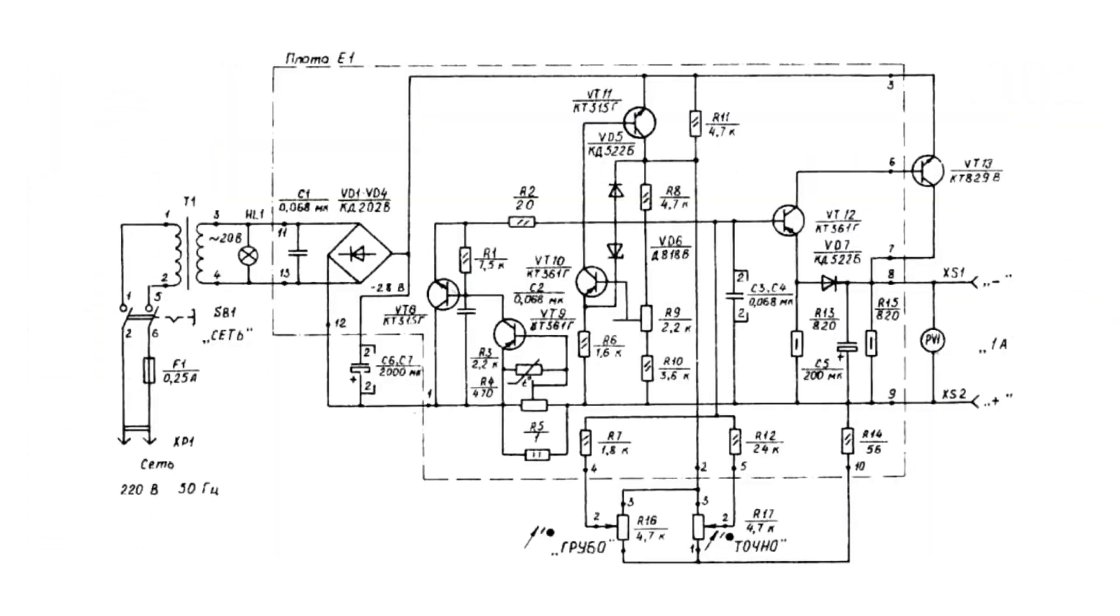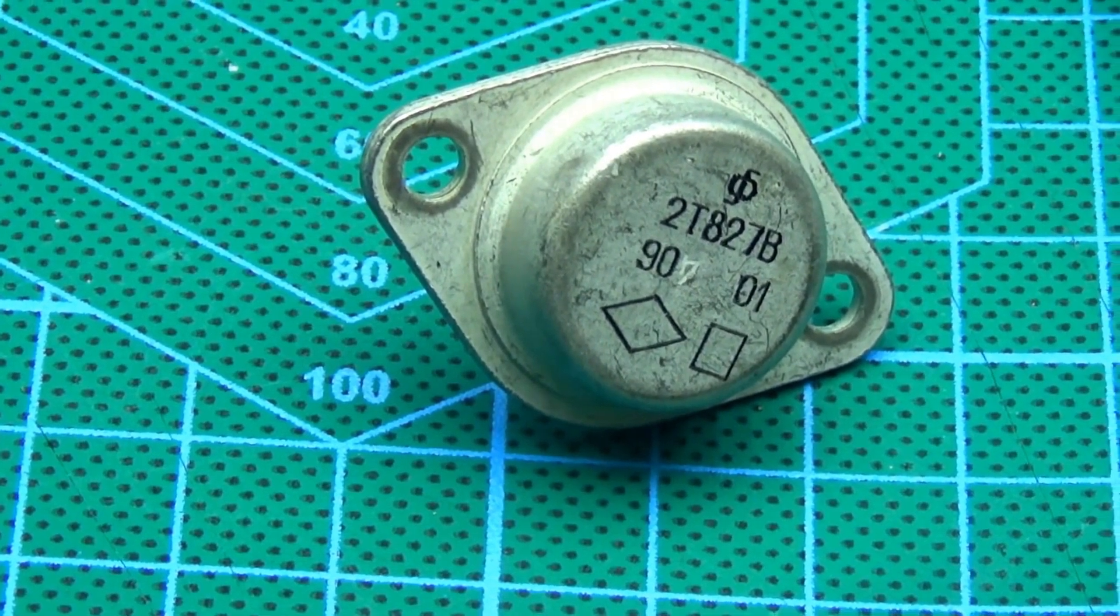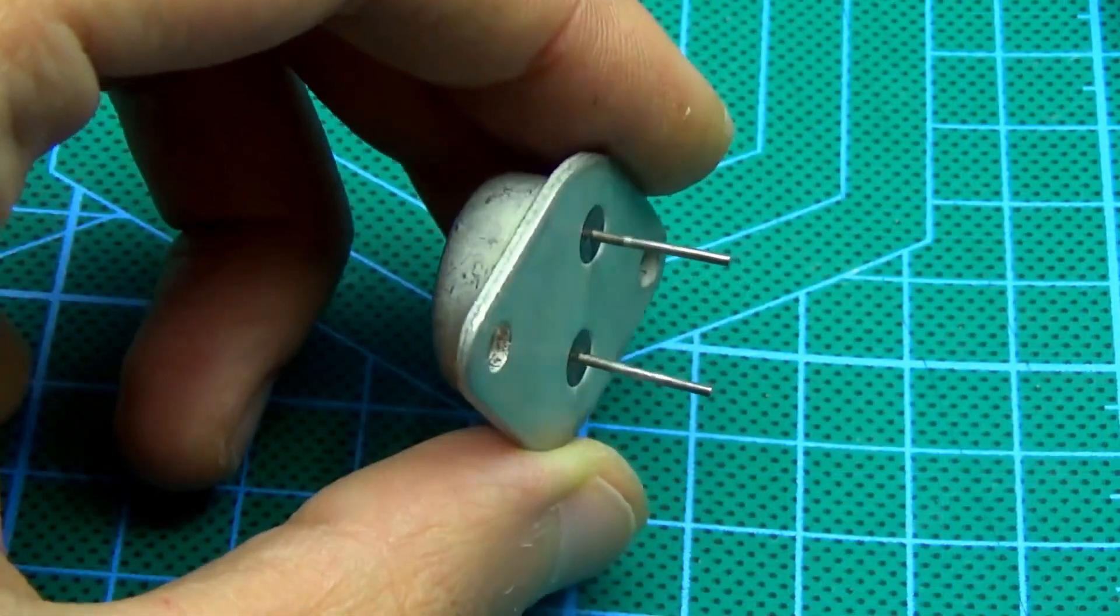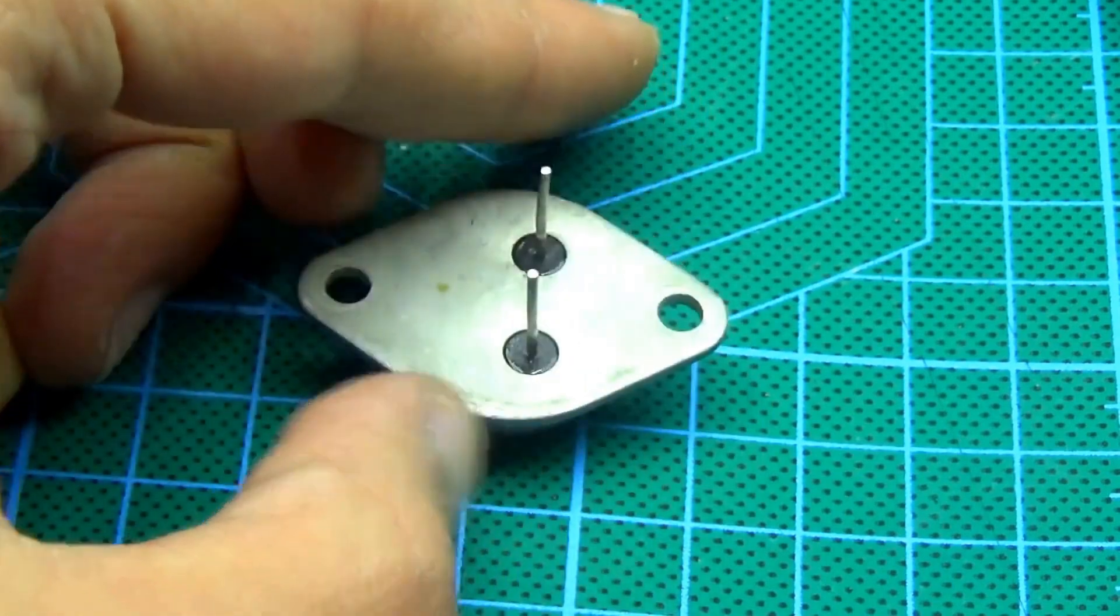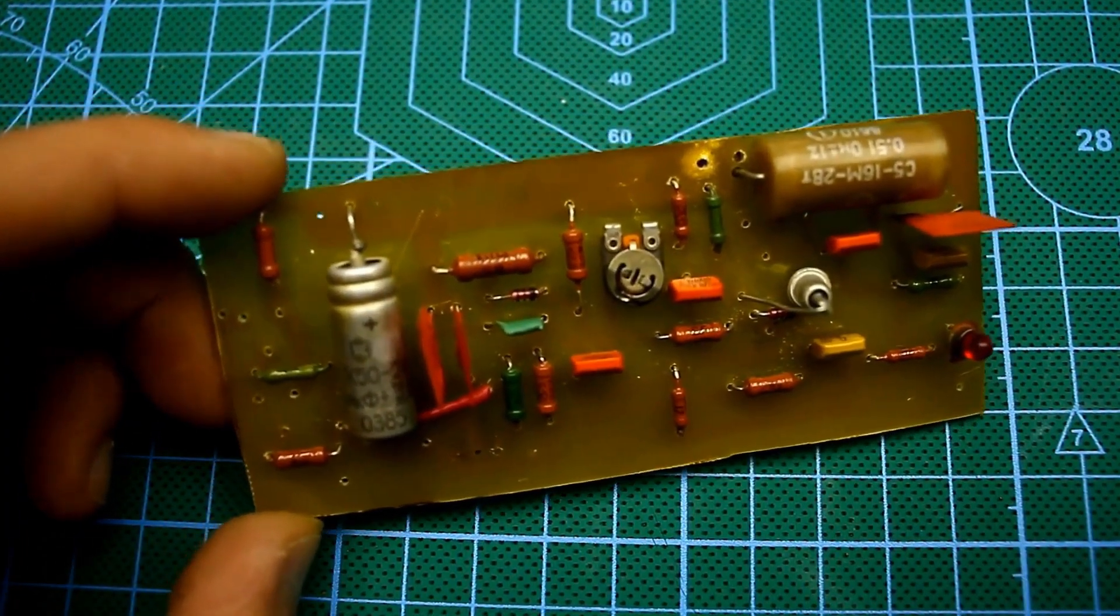Let's return to our power source. Here is the schematic in front of you. It is built on six transistors, five of which are low power. The power transistor is a composite. According to the schematic, a KT-829 is installed. I installed a much more powerful legendary KT-827, also a composite with reverse conductivity. There are minor deviations in my schematic, which do not affect the operation.